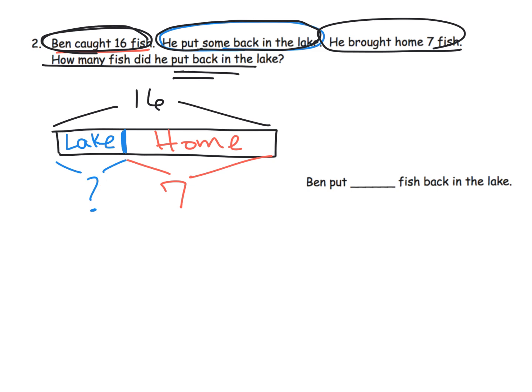Parents and teachers, notice how many times I'm going back and forth between reading the question and drawing the picture. This is really what we want our students to do. Historically, students read the question once and feel they're expected to immediately know the answer — but that's not true. You read the question, add a piece to the model, read it again, add more. Once you've got this model, it's a classic way to show you could use either subtraction or addition to find the missing value.